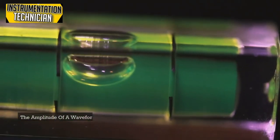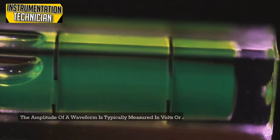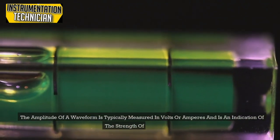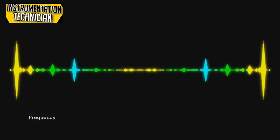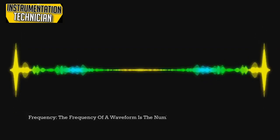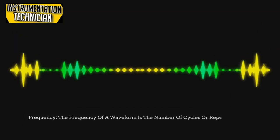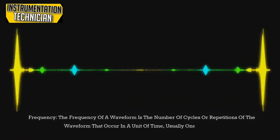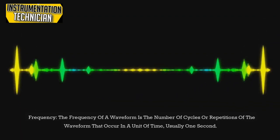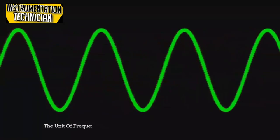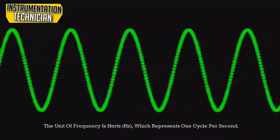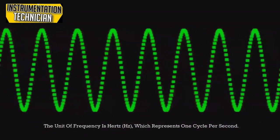The amplitude of a waveform is typically measured in volts or amperes and indicates the strength of the signal. Frequency is the number of cycles or repetitions of the waveform that occur in a unit of time — usually one second. The unit of frequency is hertz (Hz), which represents one cycle per second.